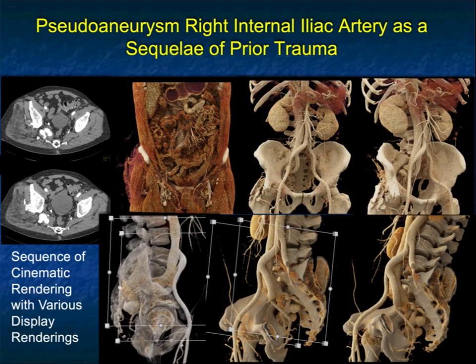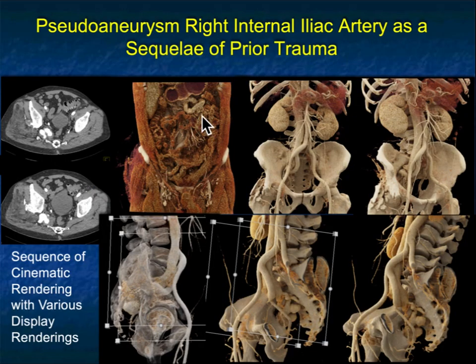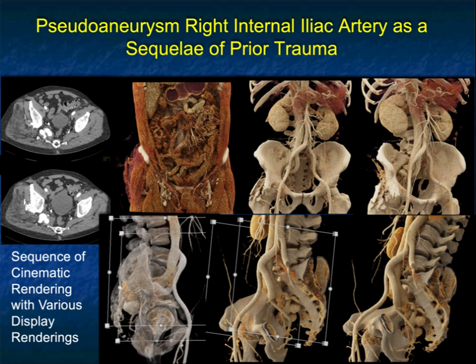Here's a patient with a right internal iliac artery aneurysm or pseudoaneurysm as a sequela of prior trauma. You can see it nicely on the patient's axial imaging, and you also see some changes in the attenuation of the muscle. I went through the same dataset with different renderings, which show you the muscle or accentuate the vasculature. I rotate the images to bring the best visualization into perspective. I'm showing you snapshots — all of this is interactive rendering.